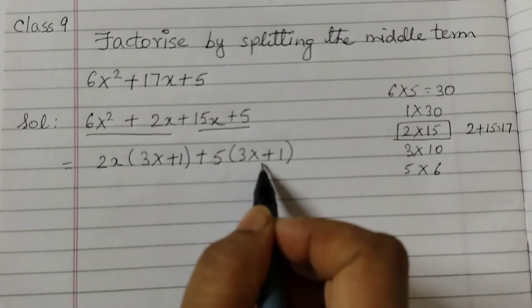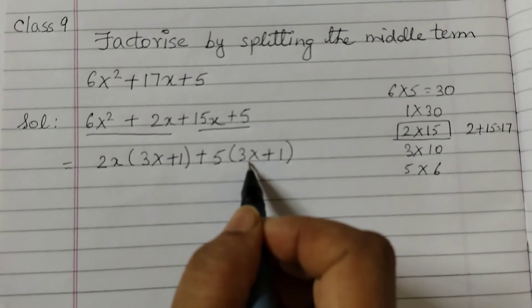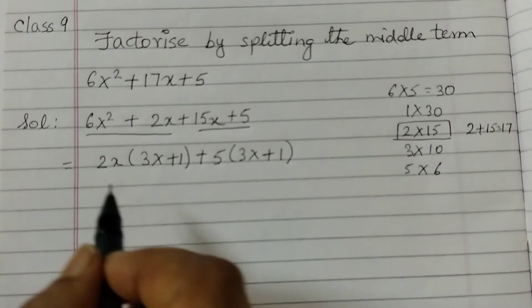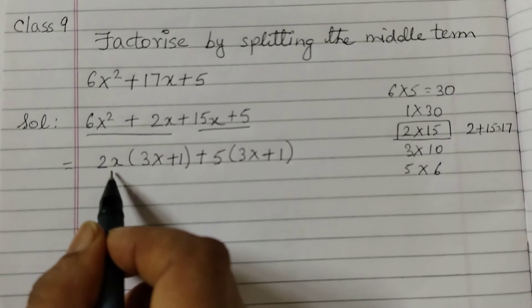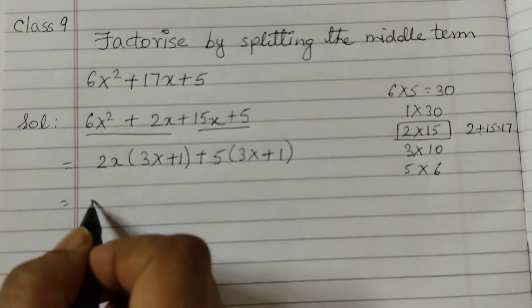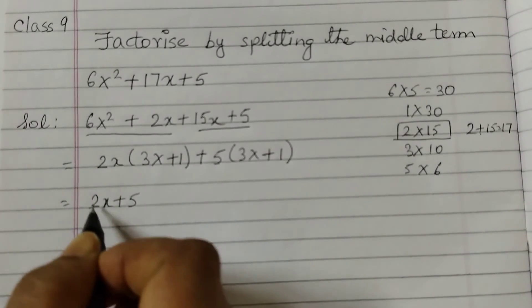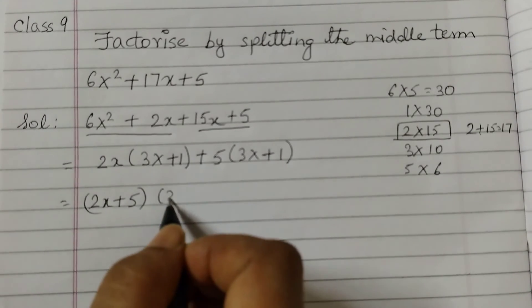Make sure that these two expressions must always be the same expression. So now write this as 2x plus 5 and 3x plus 1.